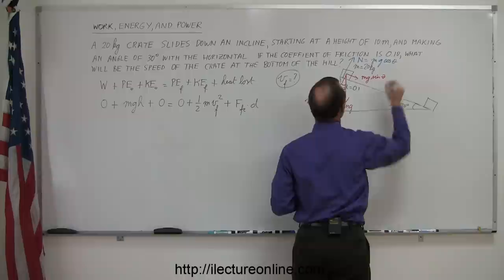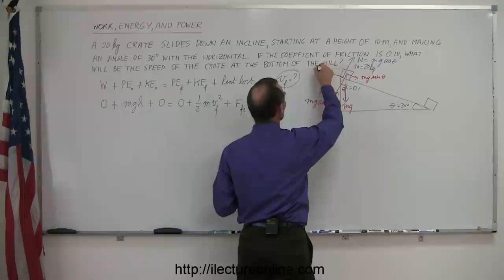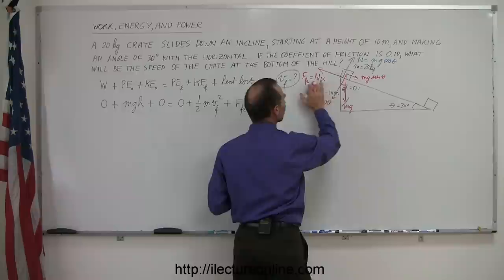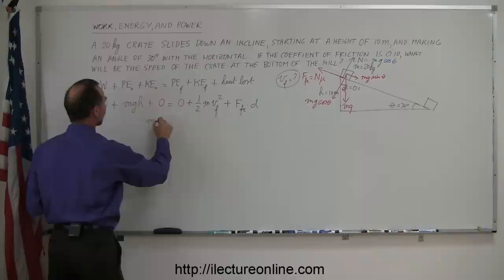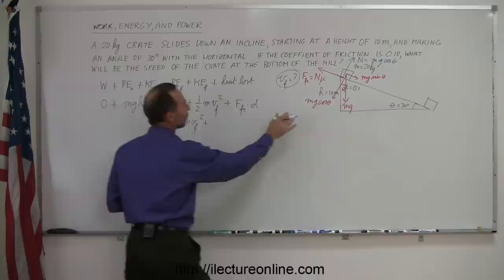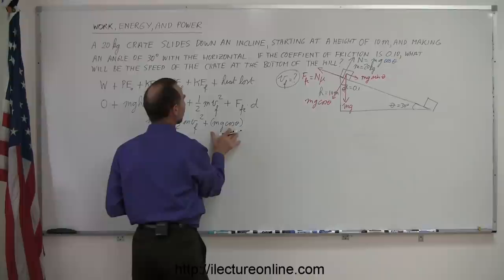Since the crate is sliding down the hill, the friction force is in the opposite direction, opposing that motion. The friction force is equal to the normal force times mu, and the normal force is mg cosine theta. When we plug that back into our equation, on the left side we simply have mgh, and on the right side we have one-half mv final squared, plus the friction force — which is mg cosine theta times mu — times the distance.